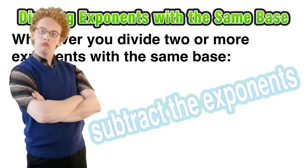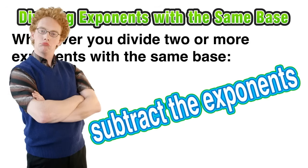So in conclusion whenever we divide two exponents with the same base you simply subtract the exponents to get a simplified form and that's all there is to it.